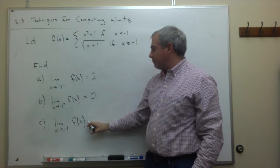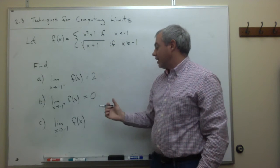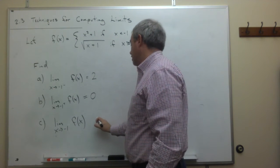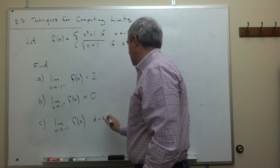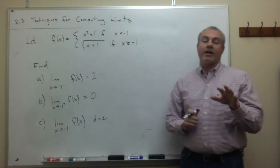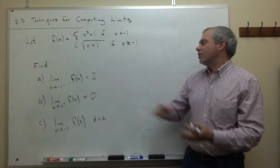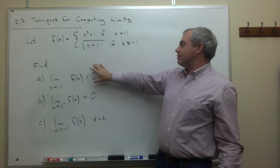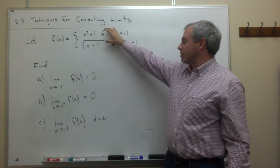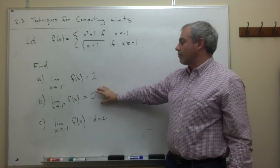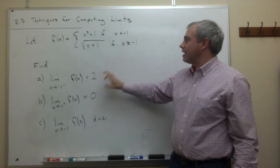Part c simply asks whether these two values are the same. The answer is they are not — 2 does not equal 0 — so the limit does not exist. That's one way of looking at this problem: identify which piece applies for part a, which piece for part b, and part c follows from those results.